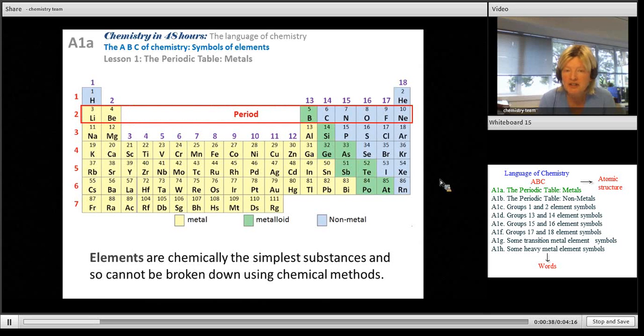The periodic table is arranged in a certain way. The horizontal rows are called periods and the vertical rows are called groups.